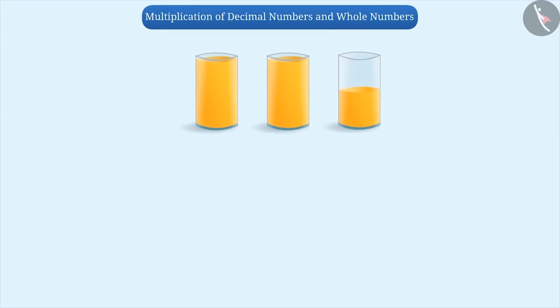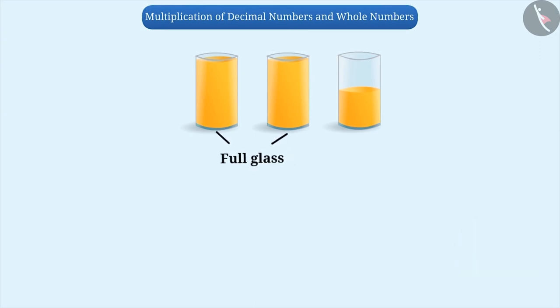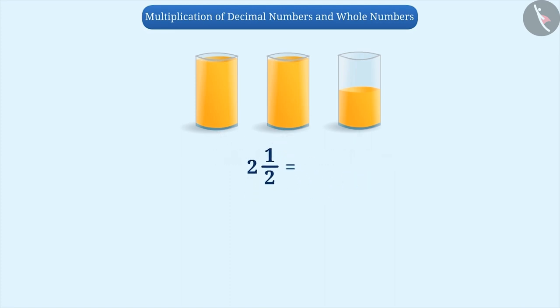Looking at the given figure, can you tell me the amount of juice present here? Think for a while. Here, two full glasses and one half glass is filled with juice, meaning we have a total of two and a half glasses of juice, which can be represented as 5 by 2.